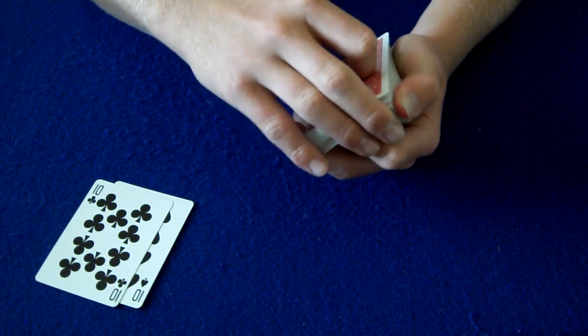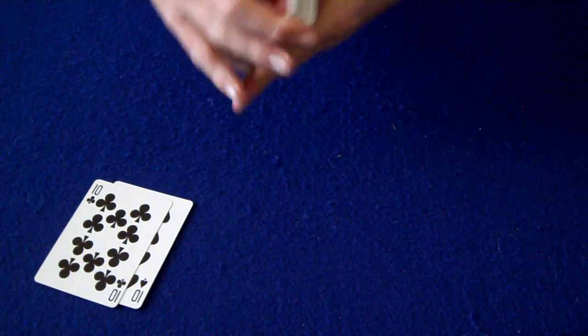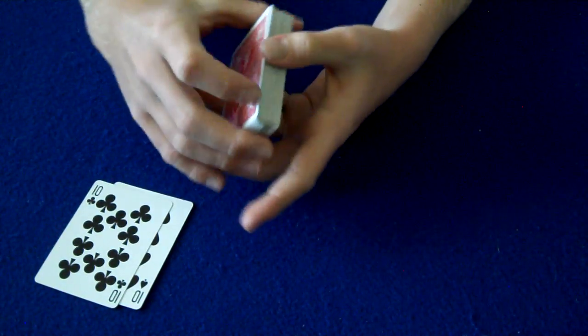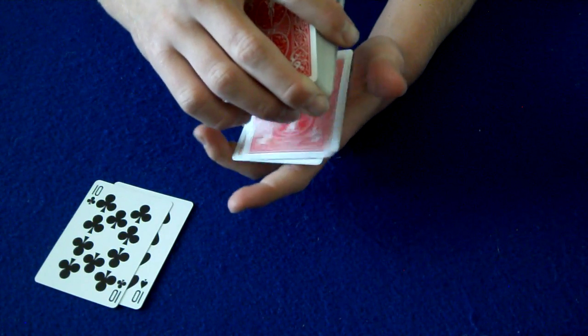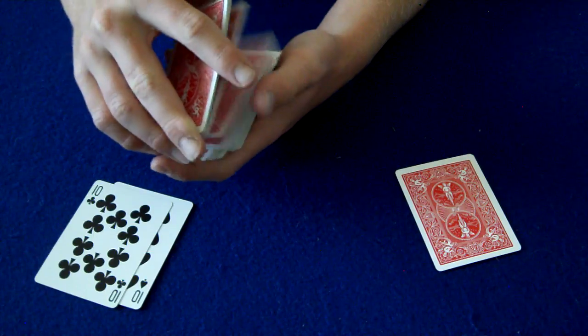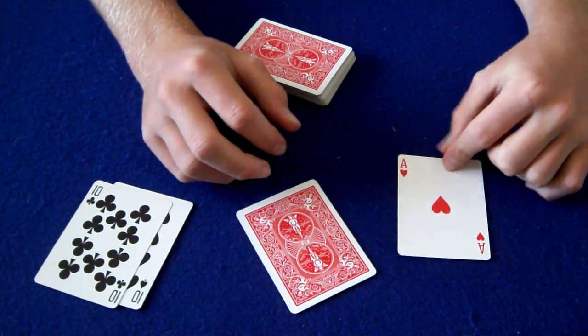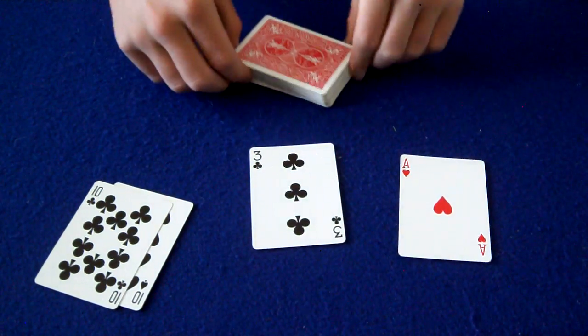So we need two cards selected. This is impromptu, so hold on, let me just shuffle. Okay, now we need two cards selected. So just tell me when to stop. Stop. Tell me when to stop. Stop. Okay, so the first card is the Ace of Hearts, the second card is the Three of Clubs.